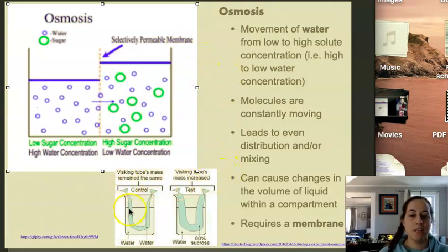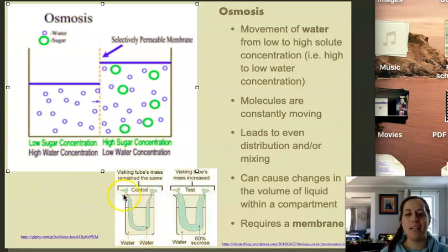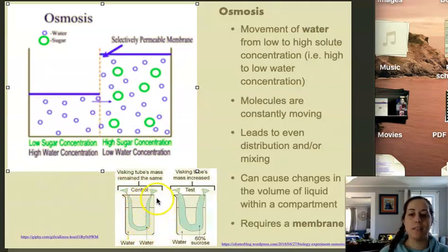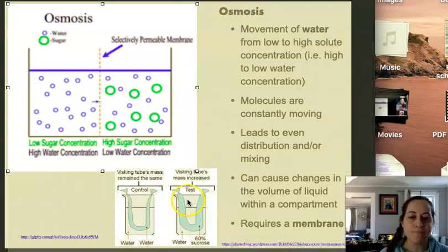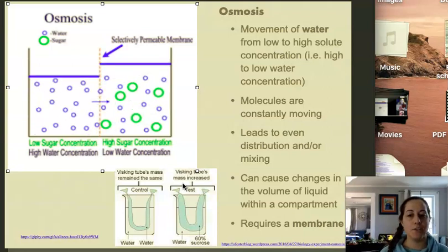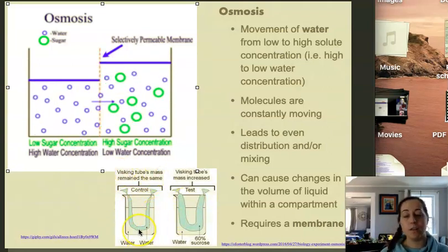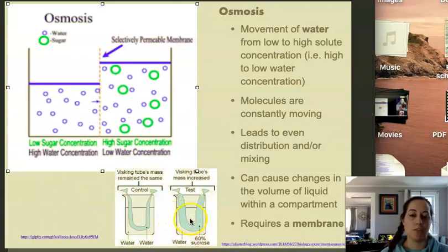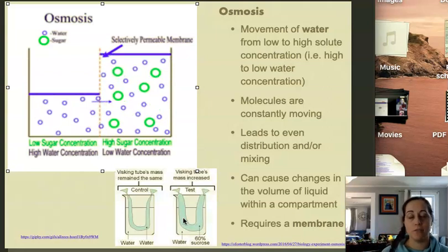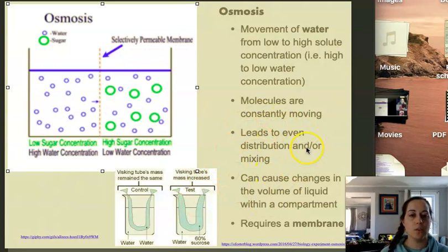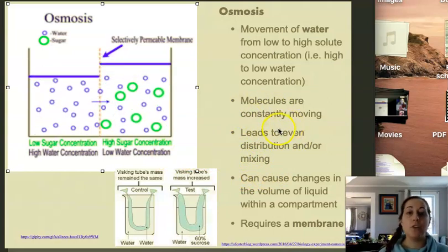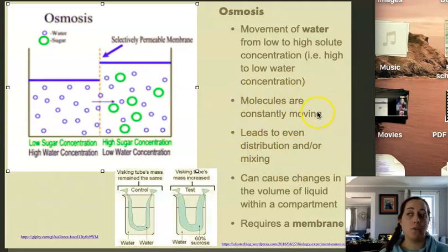We also see this in the example of dialysis tubing, which you might have used in lab at some point. These are just tubing — it kind of reminds me of the casing on a salami. You can put some sort of concentrated solution inside of the dialysis tubing, tie it off on both ends, then dip it in water and leave it soaking. The water actually goes into the dialysis tubing to dilute whatever was dissolved in the solution. So again, we're moving towards an even distribution of solutes between the two sides of the membrane, and we see that molecules are constantly moving.